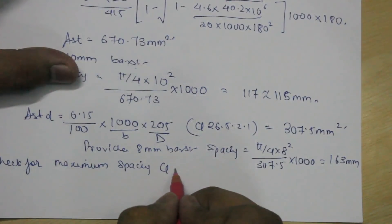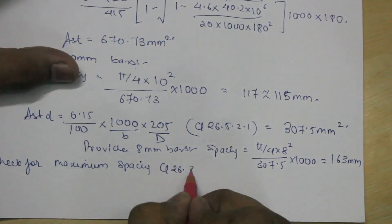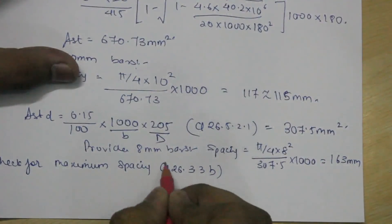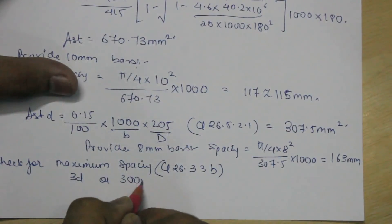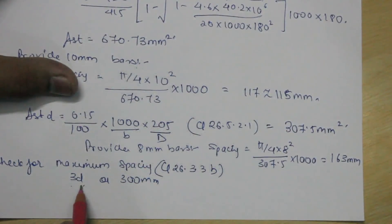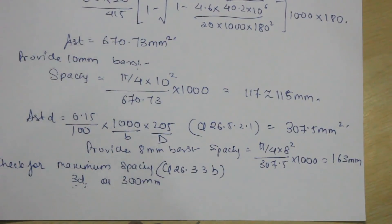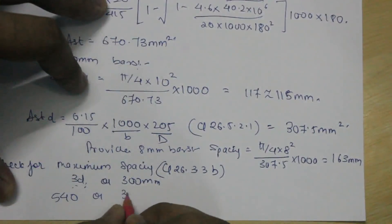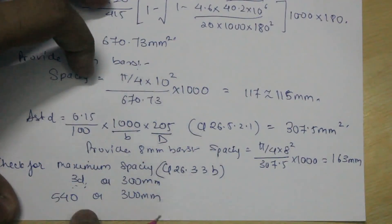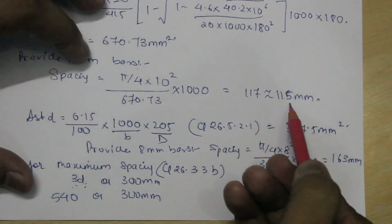This is given in clause number 26.3.3.3B, which says it should be either 3D or 300 mm. 3 into D is 3 into 180. You can multiply 3 into 180, which will be 540, or 300 mm. So in our case it is 115 mm, so it is okay.